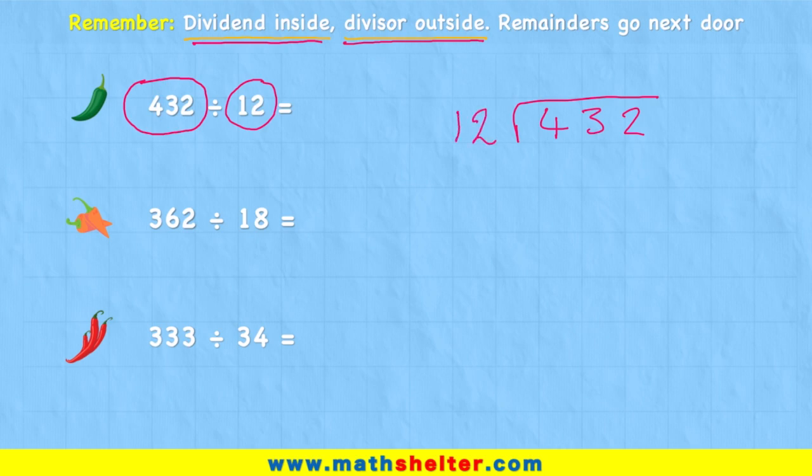Now this looks like every other division question we've ever done, except we have this two-digit divisor on the outside. Well, that's okay. We actually don't do anything different. The only difference is we might not know our 12 times tables, therefore not knowing how many groups of 12 we can take away at each time. So my advice to you is to quickly draw out the 12 times table down the side.